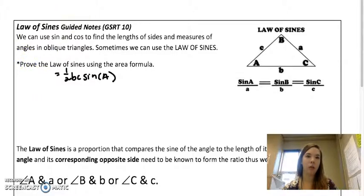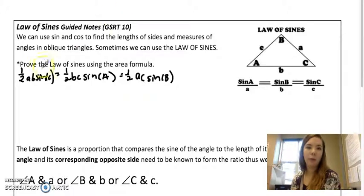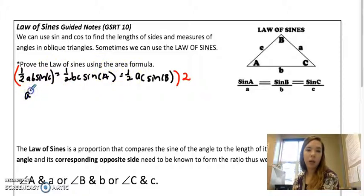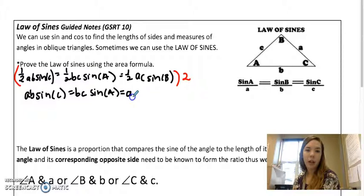Actually, what I want to do is, because they're all equal to the area of the triangle, I'm going to set them equal to each other. So one-half AB sine C equals one-half BC sine A equals one-half AC sine B. Since they're all equal to the area of this triangle, I set them equal to each other. What I want to do from here is get rid of all of these one-halves, so I'm going to multiply the whole thing by two.